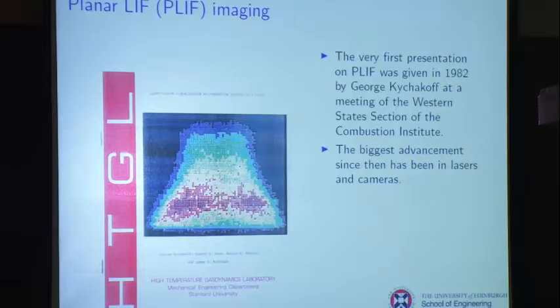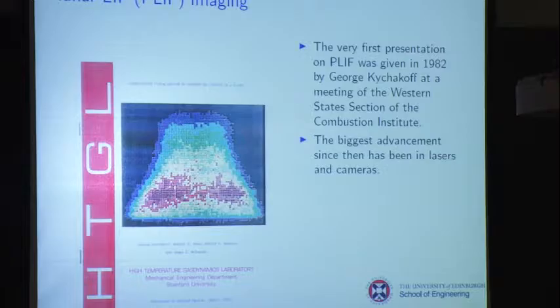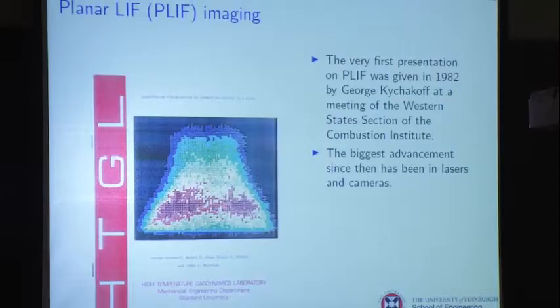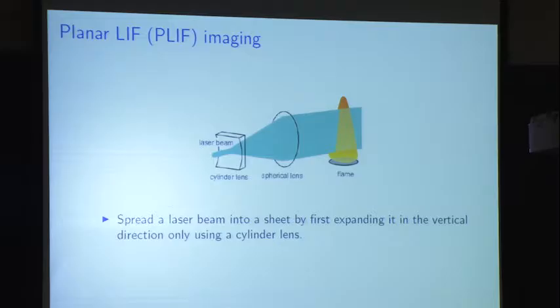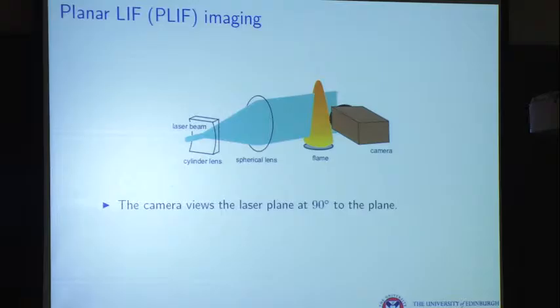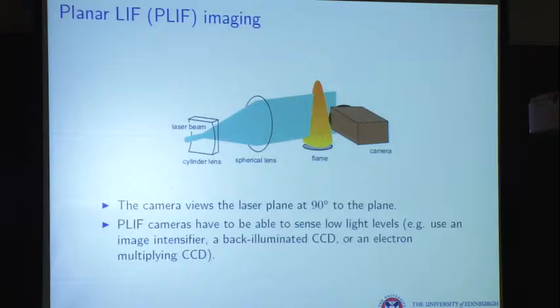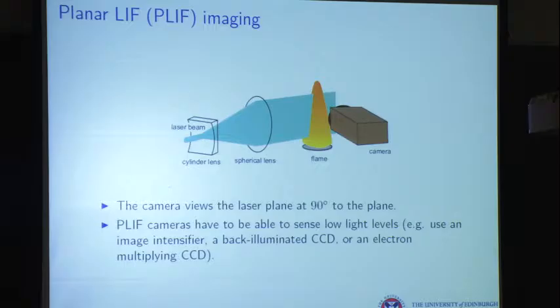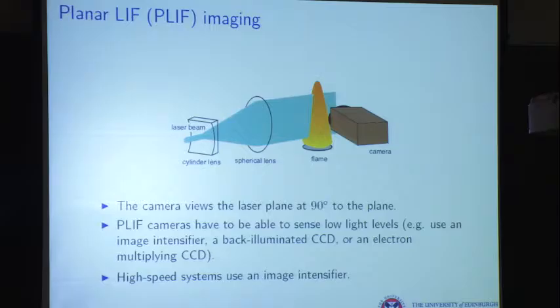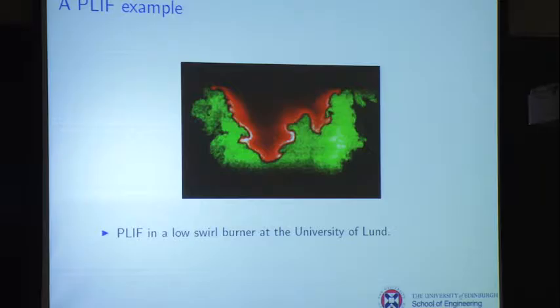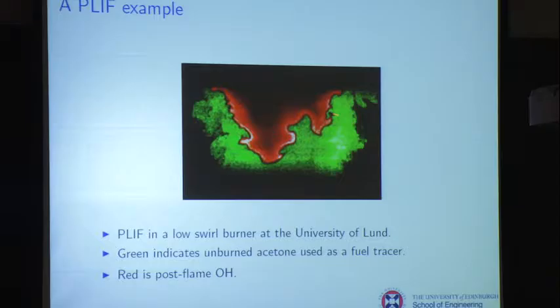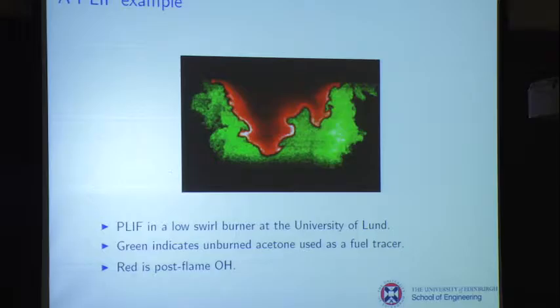The first PLIF image was highly pixelated with poor spatial resolution — it was with a Quantel laser pumping a dye laser with a wavelength extender. Really, the technology hasn't changed much; what's changed most is the cameras. For PLIF you spread the beam into a sheet with cylindrical and spherical optics, and the camera views it at 90 degrees. LIF cameras need to see low light levels, so you use an image intensifier — the most common approach — or a back-illuminated CCD, or electron-multiplying CCDs, which have really nice spatial resolution. High-speed imaging still tends to use an intensifier.